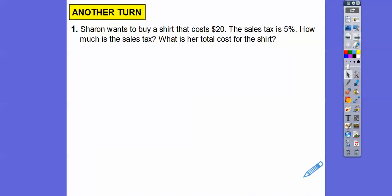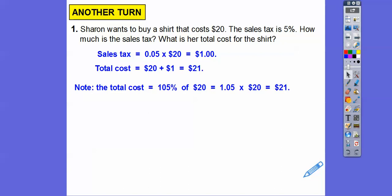All right, so Sharon wants to buy a shirt that costs 20 bucks. The sales tax is 5%. How much is the tax, and what's her total cost? The tax is we're just going to go 0.05 times 20, which is $1. So the total cost is going to be the $20 plus the tax of a dollar, so 21 bucks.